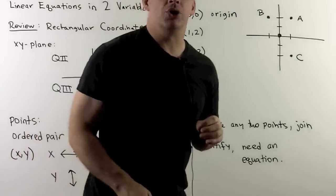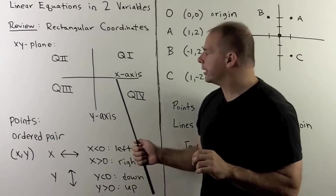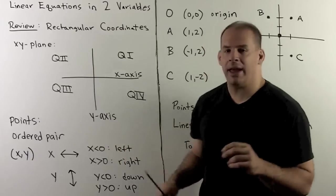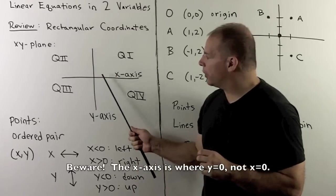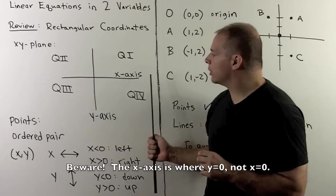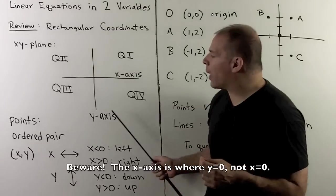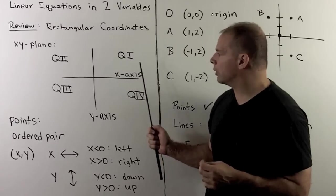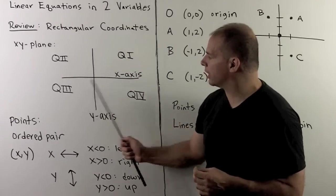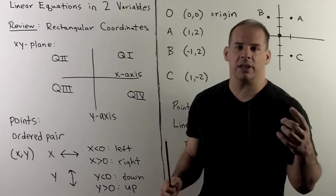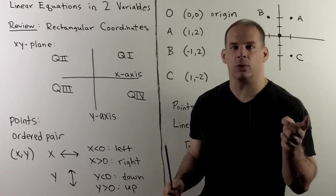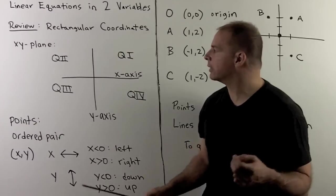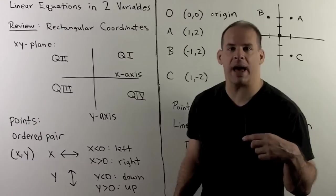Besides points, we have the x and y axes. The x-axis is the set of all points with y equals 0; the y-axis is all points with x equals 0. We also have four quadrants, numbered counterclockwise. Quadrant one has x positive and y positive; quadrant two has x negative and y positive, and so on.